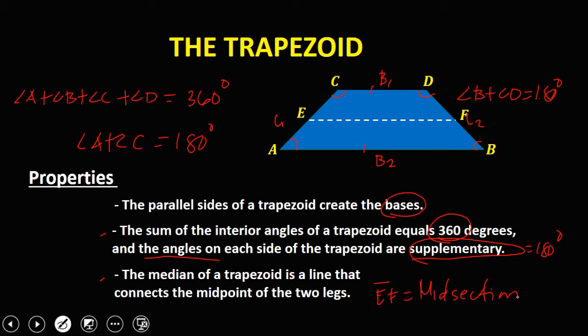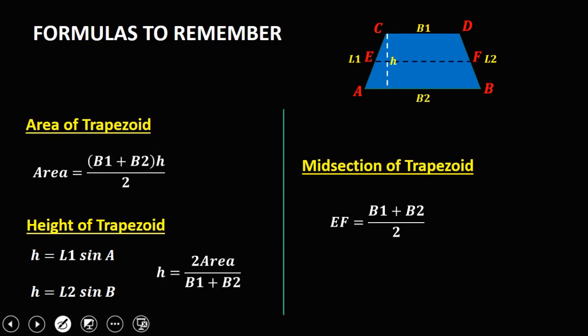These are the different formulas to remember for a trapezoid. To solve for the area: (base one plus base two) times the height, divided by two. To solve for the height: leg one times sine of angle A, or leg two times sine of angle B, or using the area formula: two times the area divided by the sum of base one and base two. To solve for the midsection: (base one plus base two) divided by two.